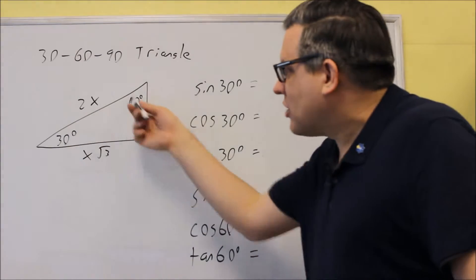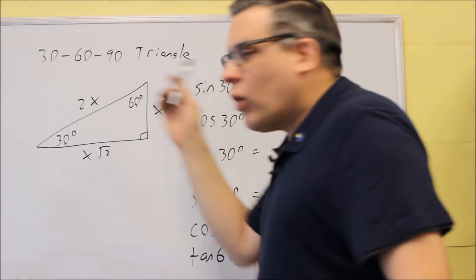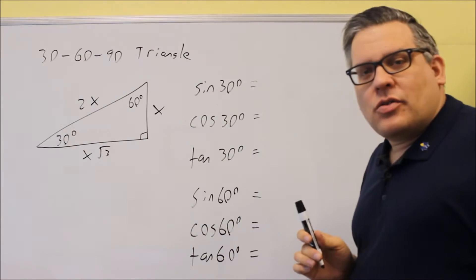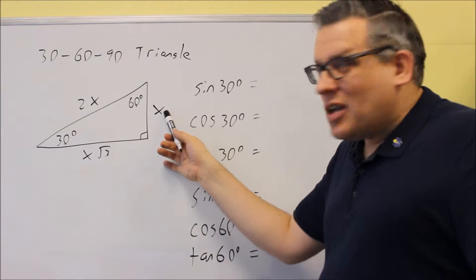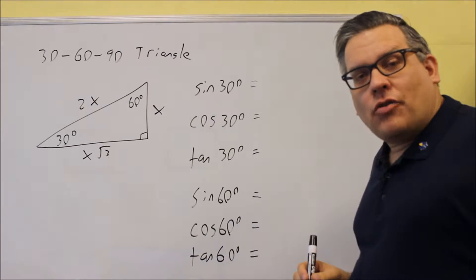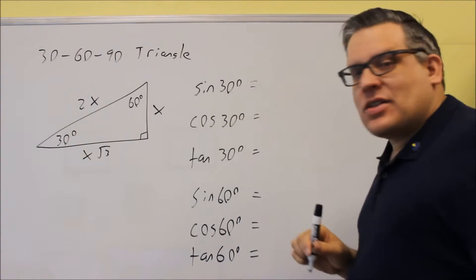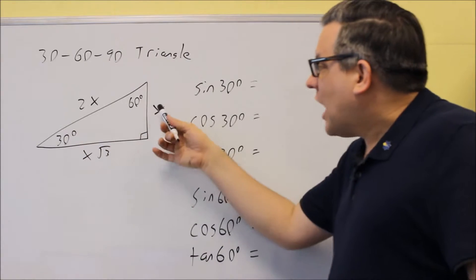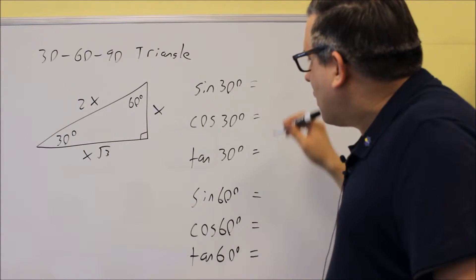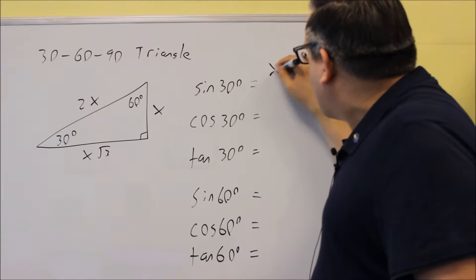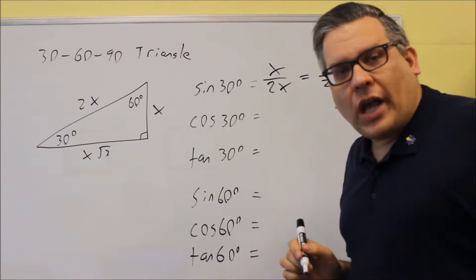For a 30-60-90 triangle, if you don't have 1 for the hypotenuse, the side opposite to 30 degrees is going to be exactly half of 2x. So if I wanted to find sine 30, that would be equal to opposite over hypotenuse by using the trig definition. It's going to be x over 2x, and that simplifies down to 1 half.